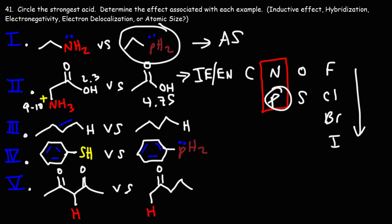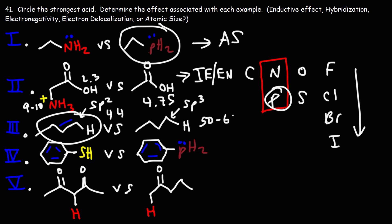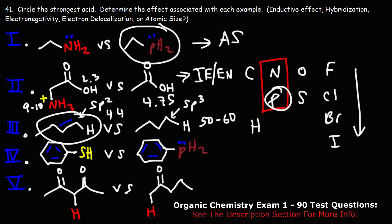Number three: we're comparing two hydrogen atoms — one is on a double bond, the other is on a single bond. The hybridization is different. Here we have a hydrogen on an sp2 carbon, and here it's on an sp3 carbon. We know the alkene is more acidic than the alkane. The pKa for an alkene is about 44, and for an alkane it's about 50 to 60. The stronger acid is the alkene hydrogen, and the reason is due to hybridization.